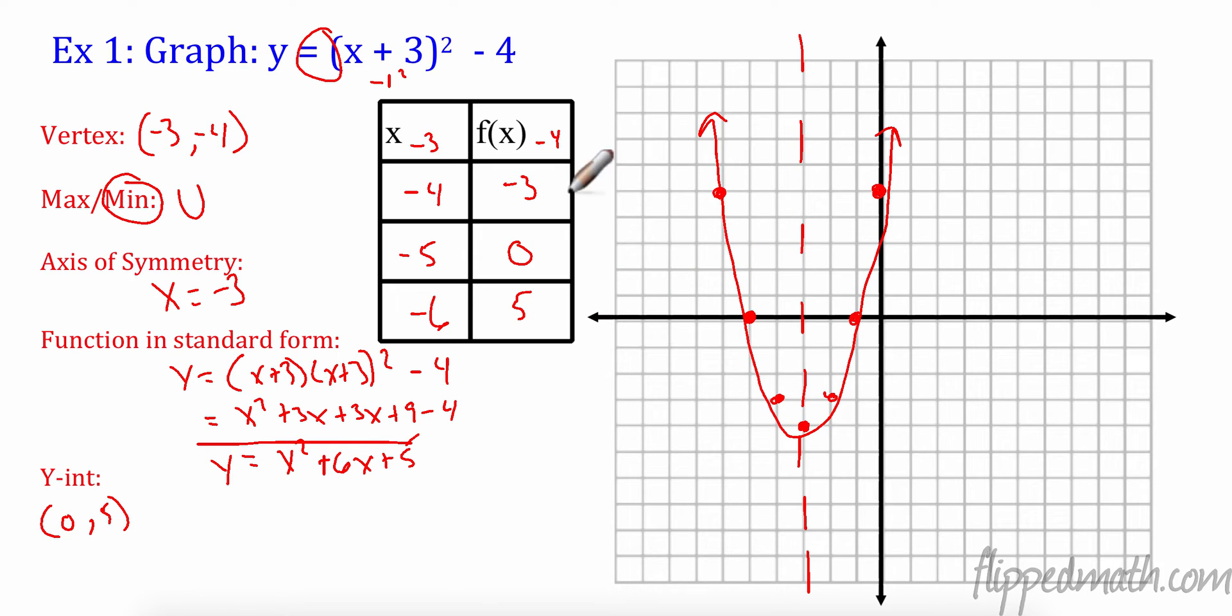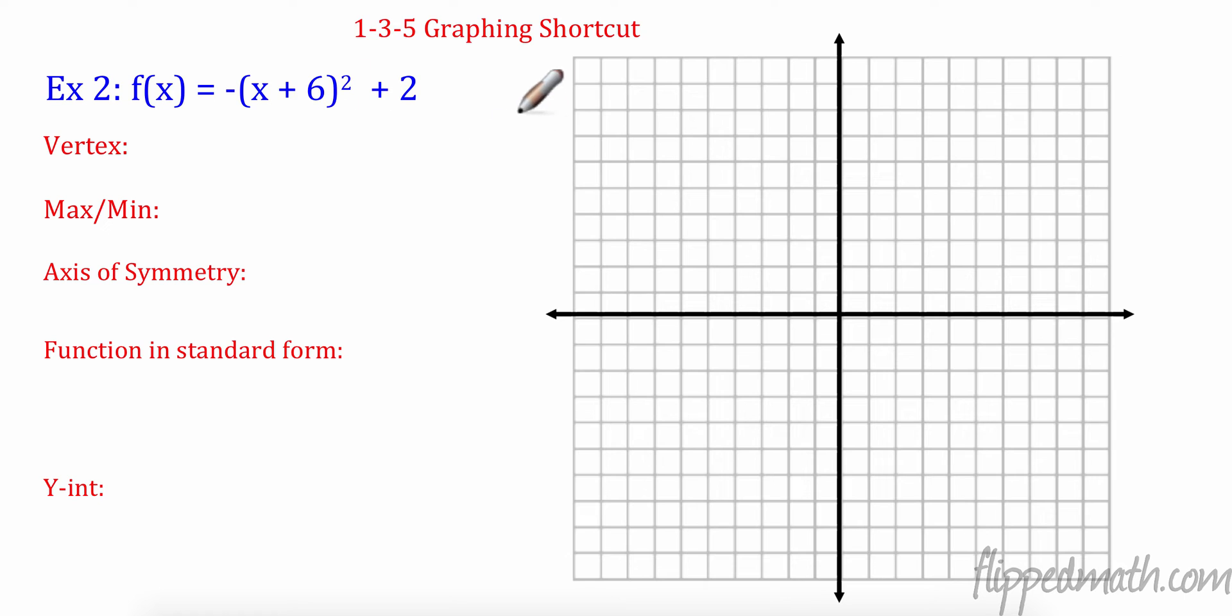Now here's the very cool thing. We're not going to have to make these tables ever again. We're going to do something called the 1, 3, 5 rule. And 1, 3, 5 rule is this. Essentially when I go over one X value, my Y values follow a very particular pattern. The negative 4 to negative 3, that went up 1. Negative 3 to 0, that went up 3. 0 to 5, that went up 5. 1, 3, 5.